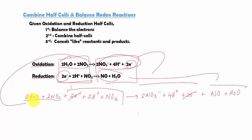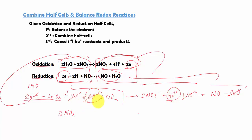Next we look at water: we have 2 water molecules on one side and 1 water on the other, so 1 cancels out leaving 1 water molecule remaining. Then we look at NO₂: we have 2 NO₂ on one side and 1 NO₂ on the other — since they are on the same side we add them: 2+1=3 NO₂. For H⁺: we have 2 H⁺ on one side and 4 H⁺ on the other; 2 cancel out, leaving 2 H⁺.